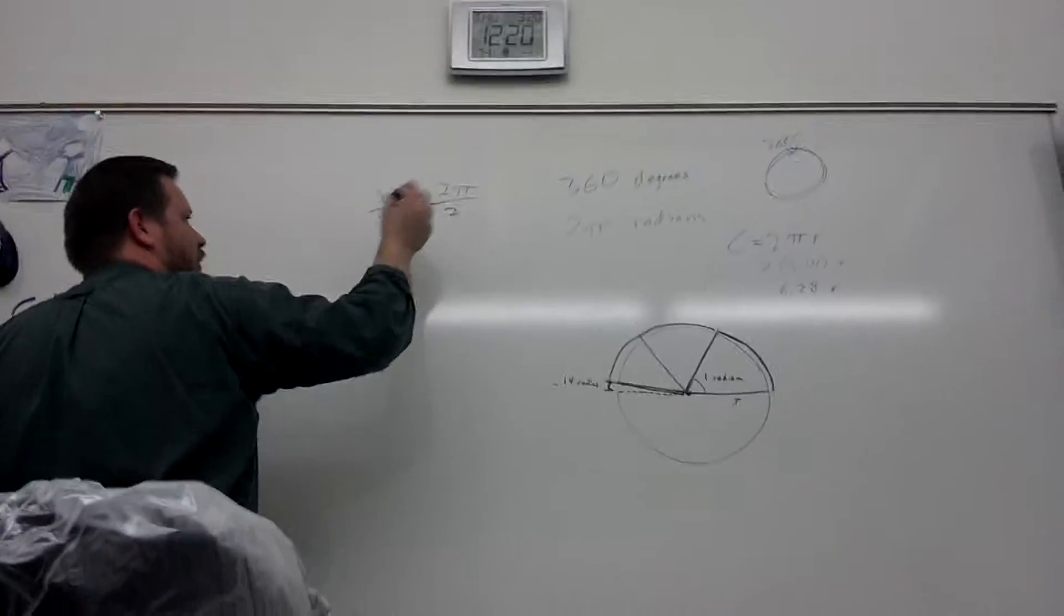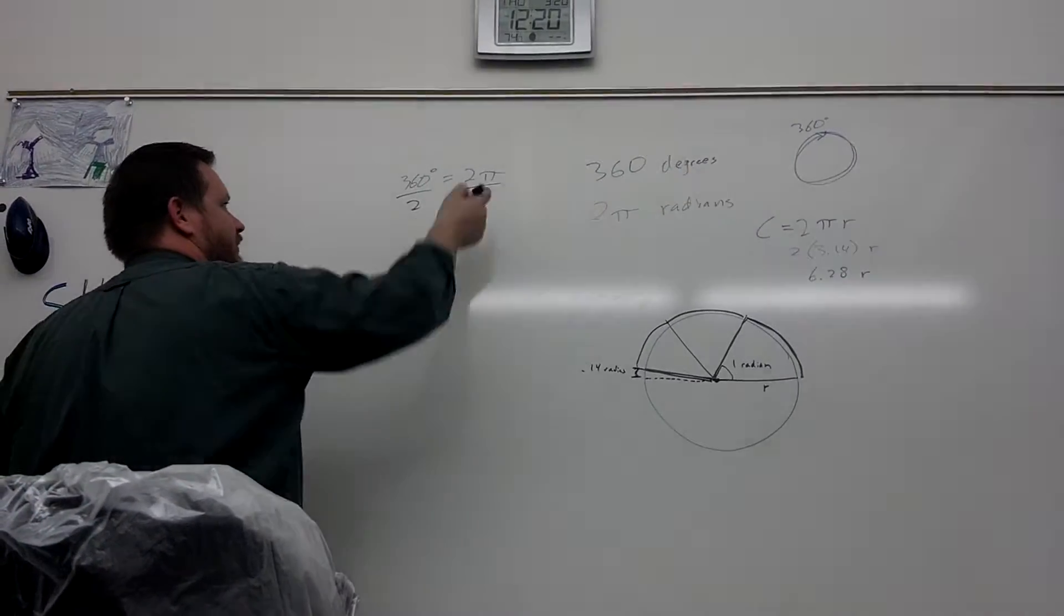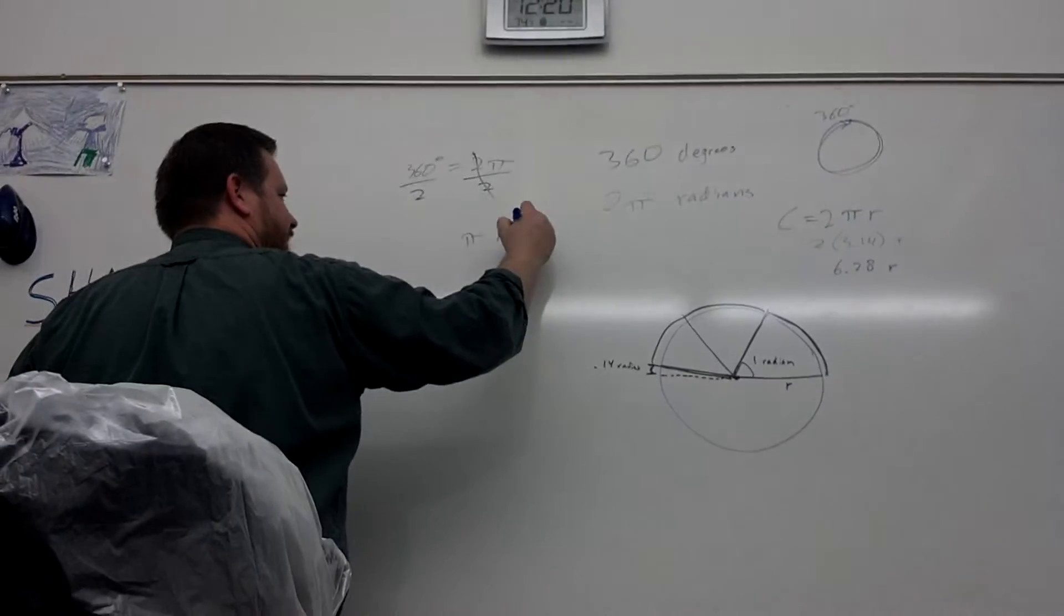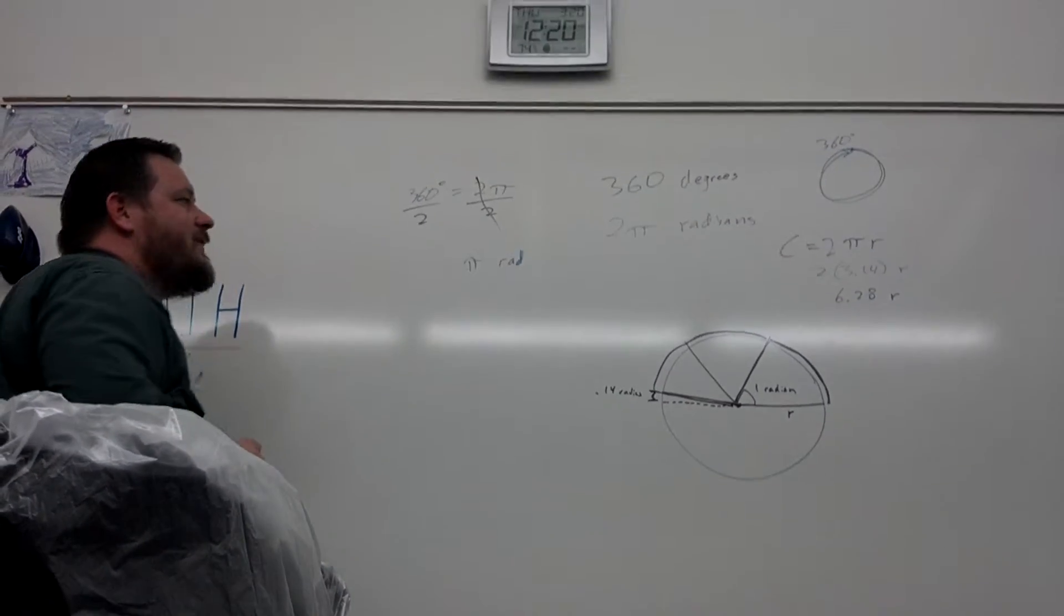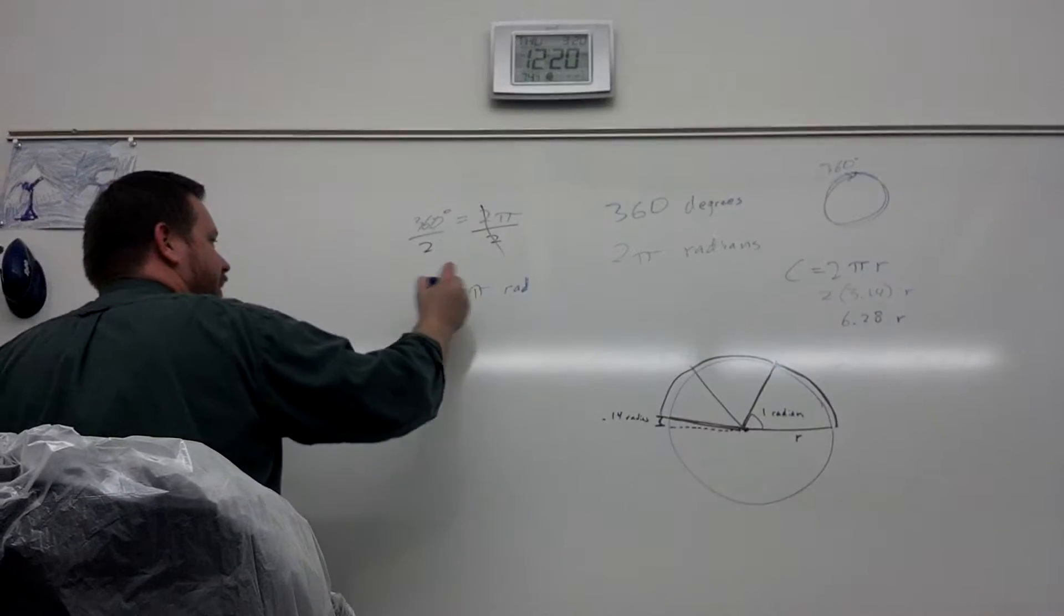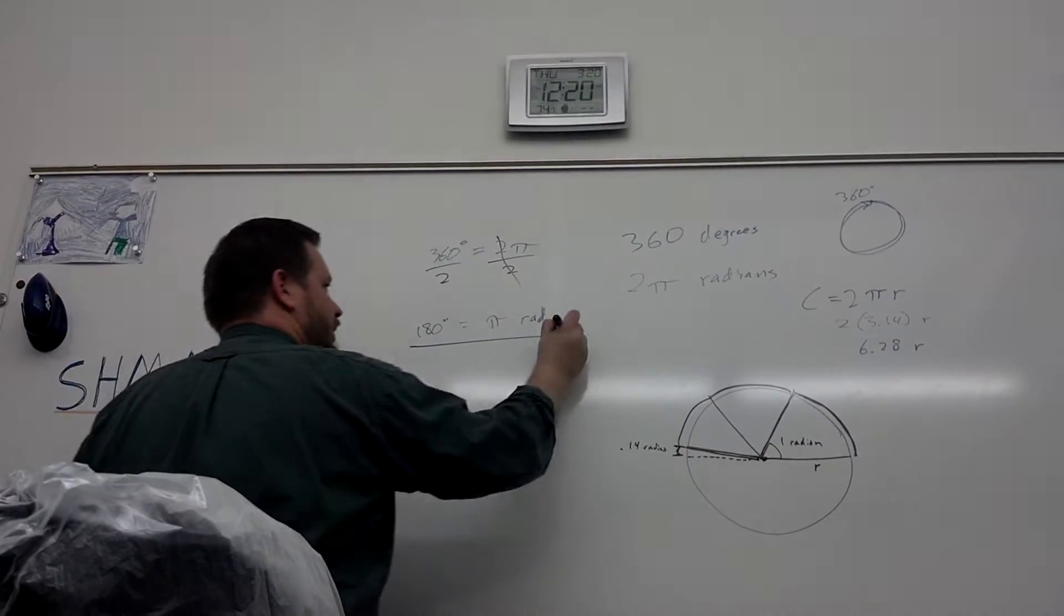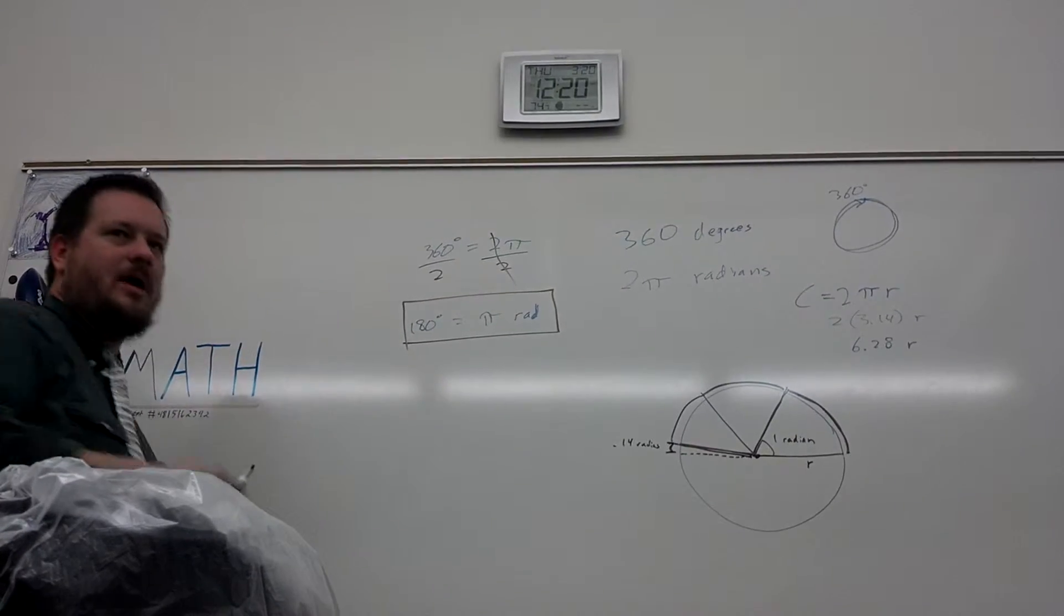So all the way around the circle is 360 degrees, or all the way around the circle is 2 pi radians. It's easier if we... What I want you to learn is this. Let's divide it by two, and we have pi radians, sometimes abbreviate radians as RAD, equals 180 degrees. That's what I do.